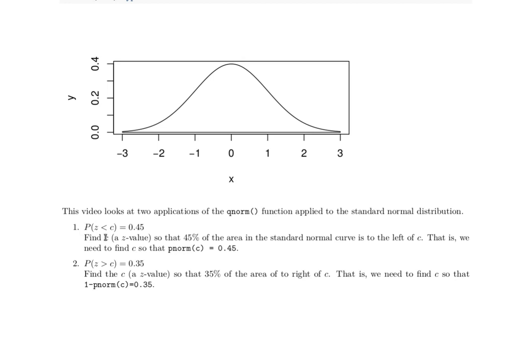What would the C value be if the probability of all the Z's less than that C was 45%, and the other problem that we'll look at is what would the C value need to be so that the probability of all the Z's being bigger than that C is 35%.